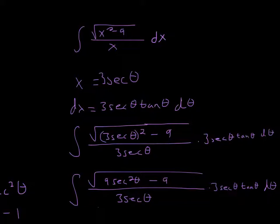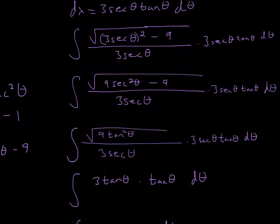Now we can do a little simplification. We square the 3 secant theta, so 3 squared is 9, giving us 9 secant squared theta minus 9, and we leave everything else the same.